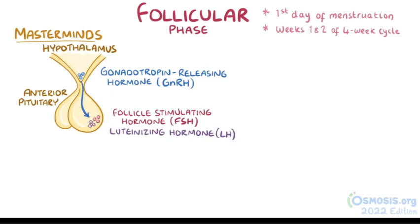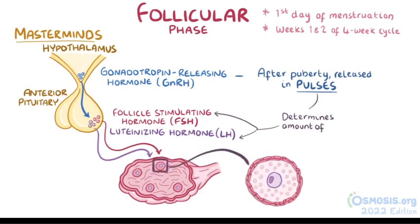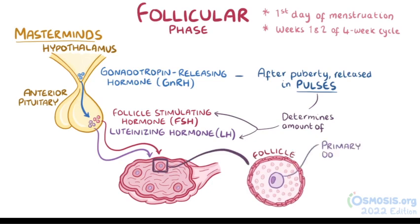Before puberty, gonadotropin-releasing hormone is released at a steady rate, but once puberty hits, it is released in pulses — sometimes more and sometimes less. The frequency and magnitude of these GnRH pulses determine how much FSH and LH will be produced by the pituitary. These pituitary hormones control the maturation of the ovarian follicles, each of which is initially made up of an immature sex cell, or primary oocyte, surrounded by layers of theca and granulosa cells — the hormone-secreting cells of the ovary.